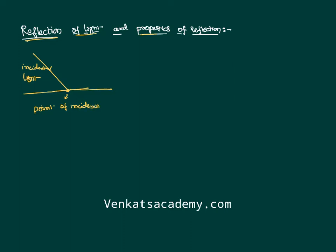If I draw a perpendicular line passing through the point of incidence, this is called the normal. Now if the light ray strikes back to the same medium and comes back, this property of light coming back to the same medium is called reflection of light. This returning light ray is called the reflected light.